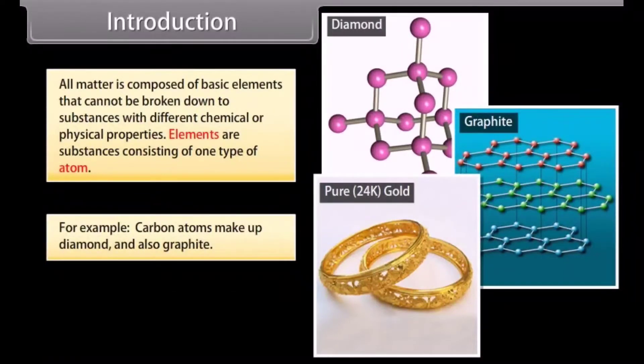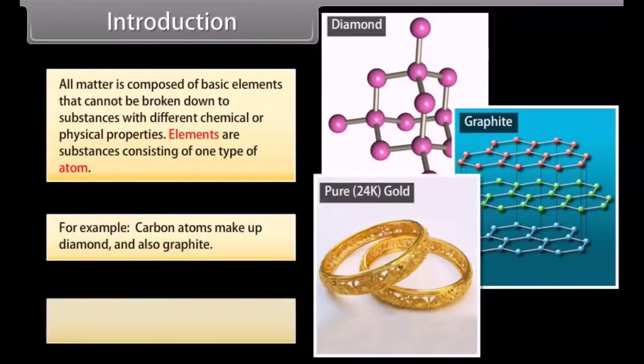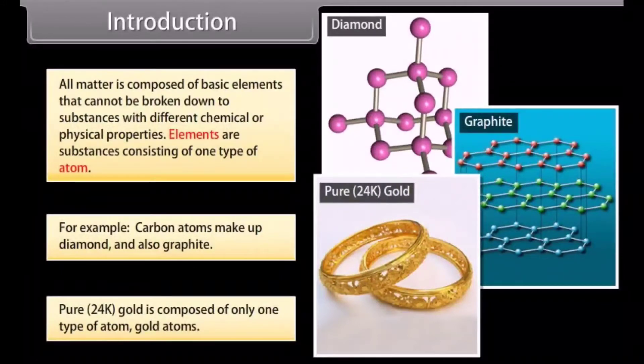For example, carbon atoms make up diamond and also graphite. Pure 24 karat gold is composed of only one type of atom, gold atoms.